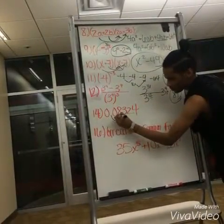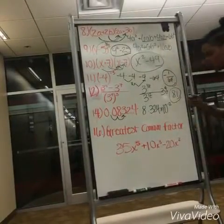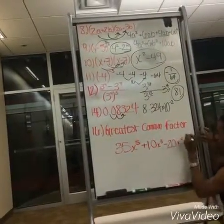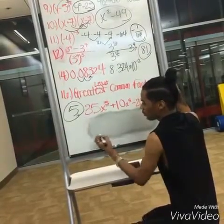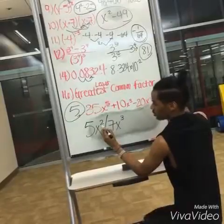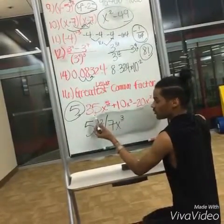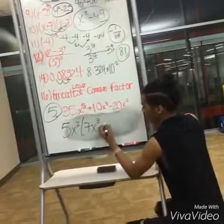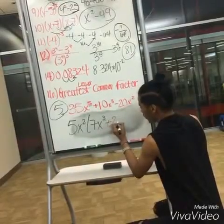For number fourteen, you have to move the decimal two places over, which gives you 8.324 times 10 to the negative 2nd power. For the greatest common factor, the GCF is 5. So to get 35, you would do 5x squared times 7x to the 3rd power, because 2nd power plus 3rd power gives you the 5th power. 5x squared times 7x to the 3rd power gives you 35x to the 5th power. And then 5x squared times 10x to the 3rd power divided by 5x squared gives you 2x.